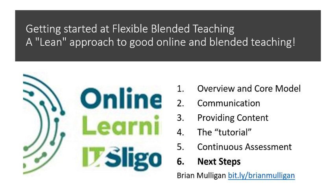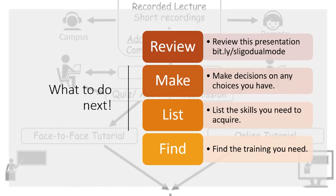This one is just the next steps after listening to those five videos, which are really generic videos — you'll need to figure out what you need to do next. The first thing is to review this presentation, and rather than go back and look at the videos, there is a document at bit.ly/sligo-dual-mode. Just copy that — should be easy enough to find. Scan back through that.